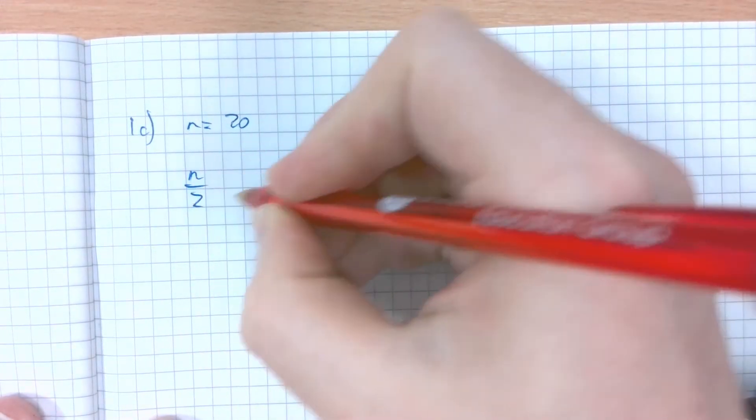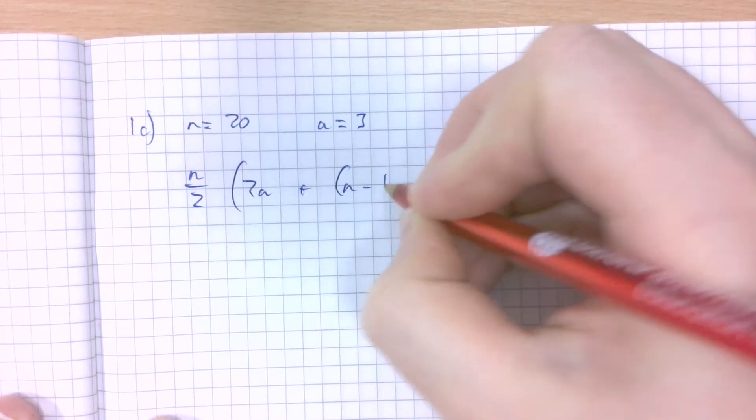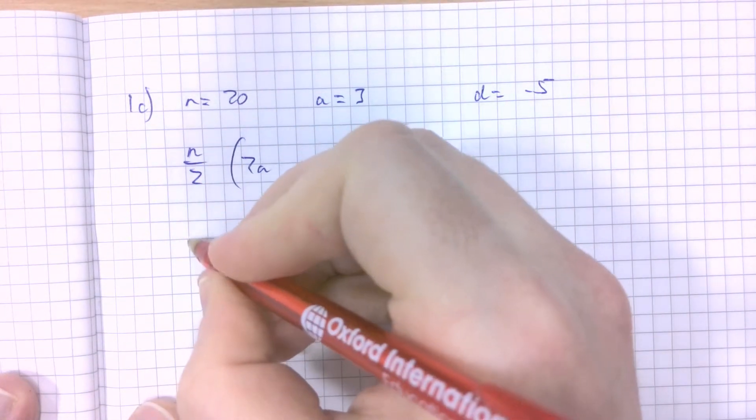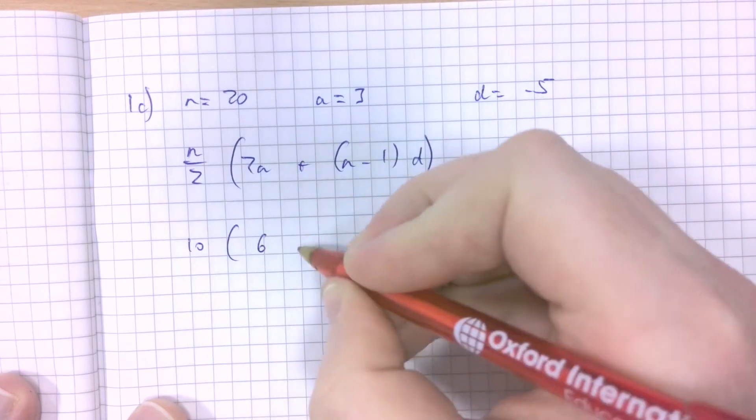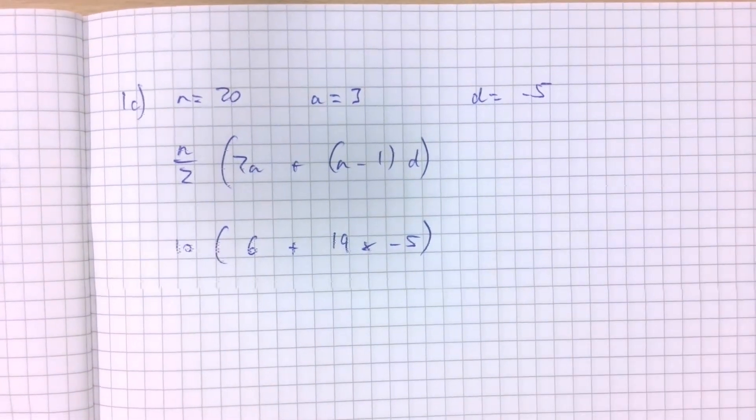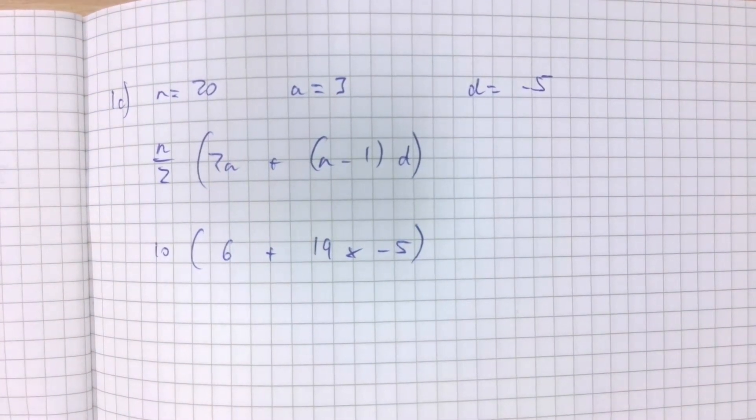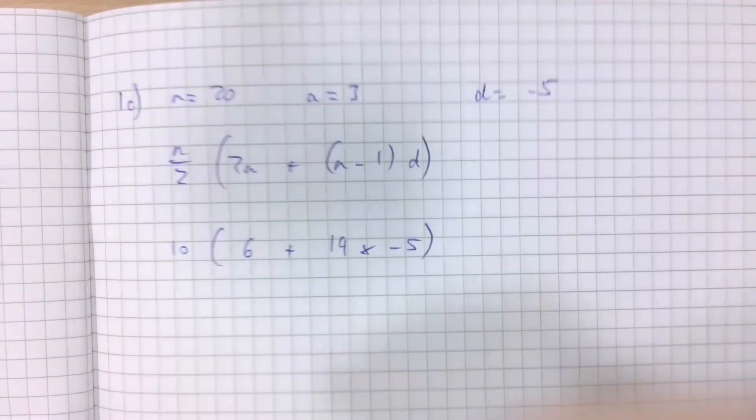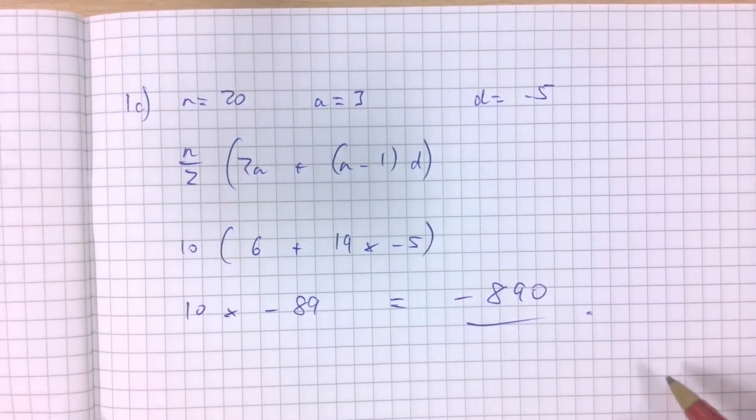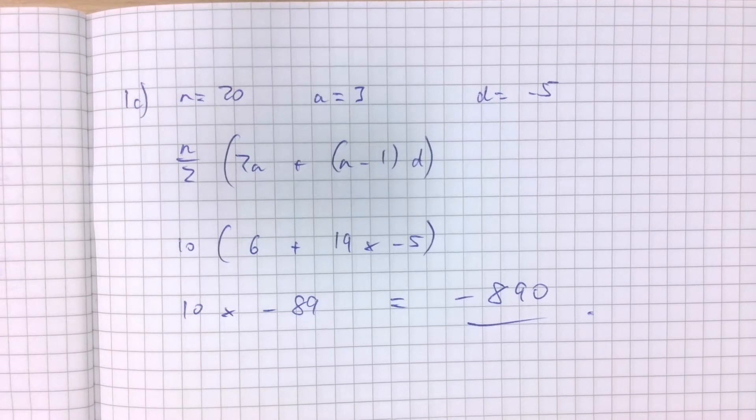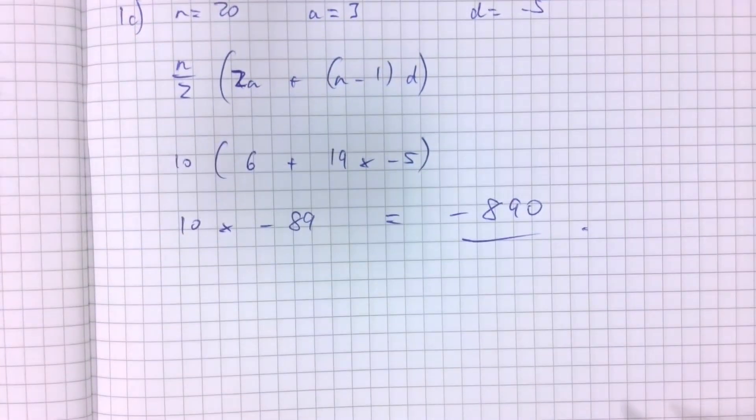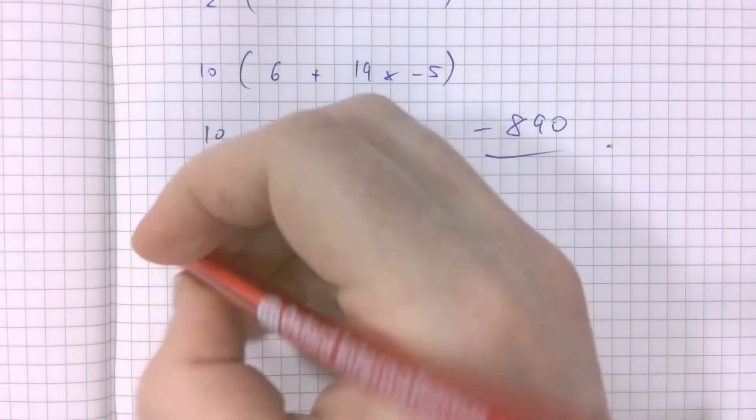The formula, for those of us who are not fluent as of yet, is this: n over 2 times 2a plus n minus 1d. Let's substitute in the values. 20 divided by 2, 10. If a is 3, 2a is 6. 20 take away 1 is 19, and the difference is negative 5. So it's 19 times negative 5, plus 6. So it's 10 times negative 89, making it minus 890.